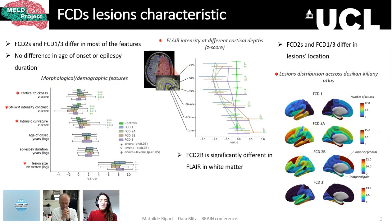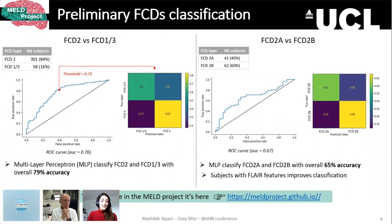These features can be used to train machine learning algorithms to classify subtypes. Indeed, these features enable us to differentiate FCD2 from FCD1 and 3 with 79% accuracy. The model classified FCD2 with 83% sensitivity and FCD1 and 3 with 60% sensitivity, which is higher than the baseline model — meaning randomly predicting groups based on proportion.